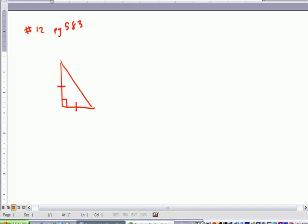If it's an isosceles right triangle, what type of triangle is it? Do we know? Good, 45-45-90, where the legs are equal to x and the hypotenuse is equal to √2 times x.